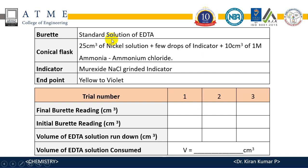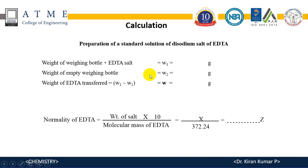This is the calculation part and the procedure. This is the tabulation part. Final burette reading minus initial, if it is 0, it will be 0. Final minus initial gives the volume of EDTA run down or consumed. You should take three readings. You should be very careful in each reading and any one reading is recorded here. This is the calculation part.